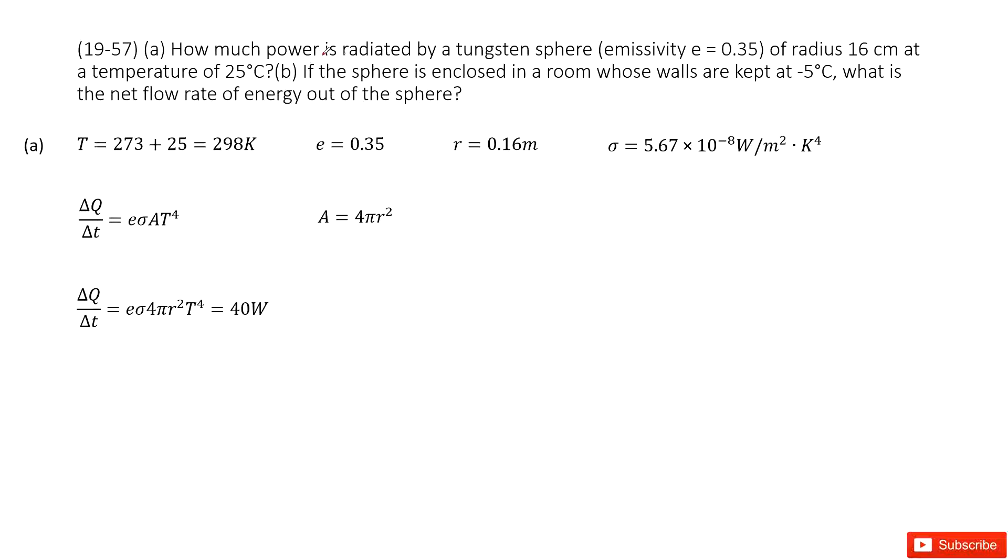We need to find the radiation power by a sphere. It tells us the emissivity e is given as a constant. The radius is given and the temperature is given. We can convert the unit to Kelvin. Then we get the function for radiation power from our textbook as eσAT⁴. Now we look at here.